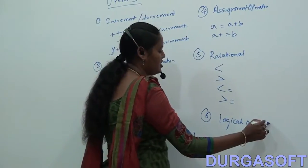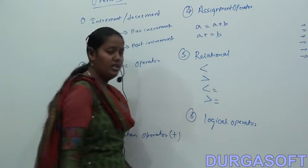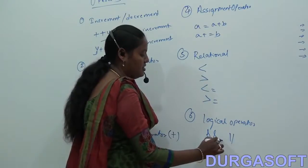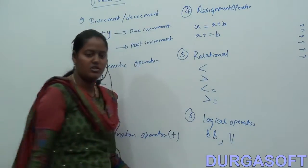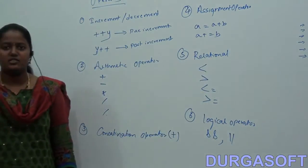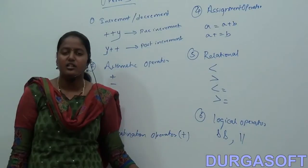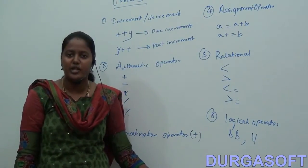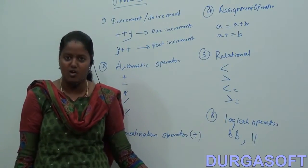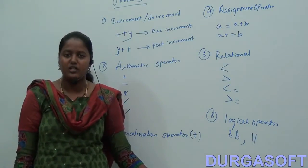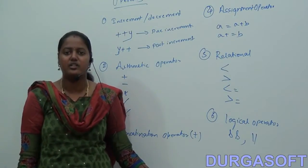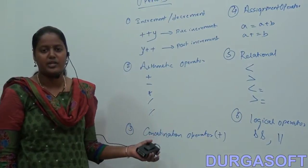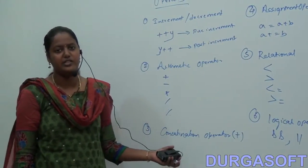Next is the logical operator — we have AND and OR as logical operators. The next operator is the new operator. The purpose of the new operator is to create an object. These are the several operators we have in .NET.